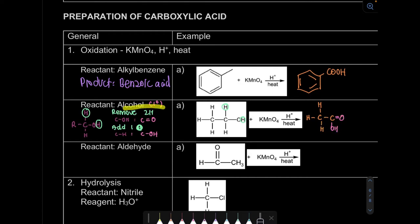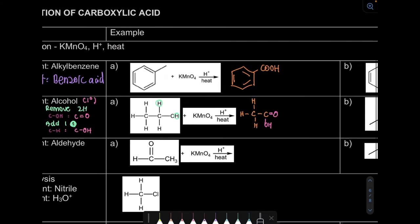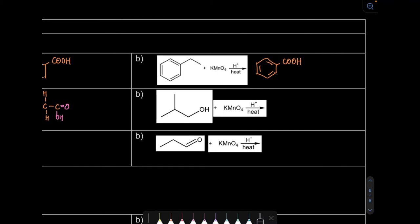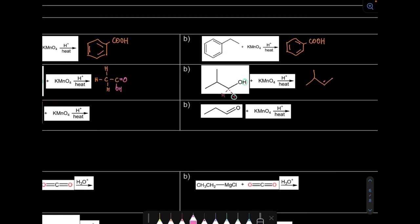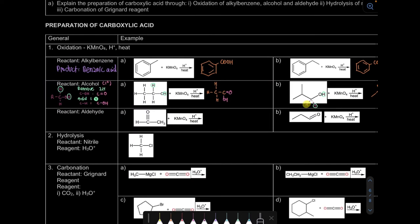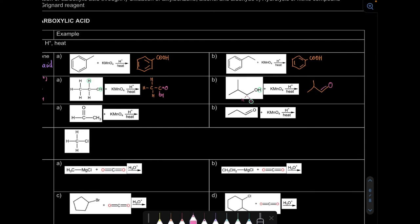Let's look at the skeletal formula case. On the carbon here we have only two bonds shown, meaning there are two more bonds to hydrogen. We remove hydrogen so the OH becomes C double bond O, and then the leftover H — we add oxygen to it — so it becomes OH, and we get our carboxylic acid.